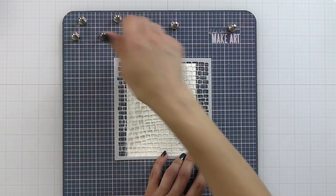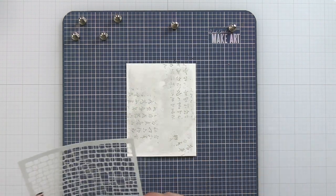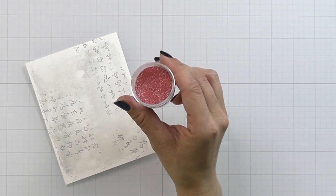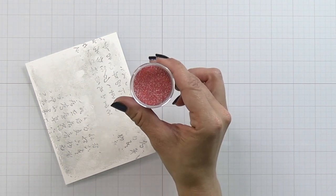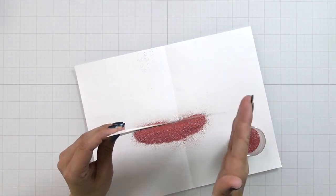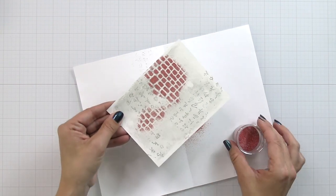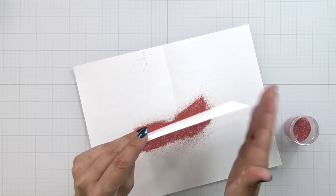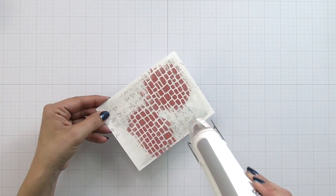After I remove the stencil I'm bringing in the brick embossing powder. I'll be honest, when I first saw this in person I thought it was sparkly, but it's not sparkly. There's white bits in there which makes it look super cool. I'm going to sprinkle this on to my background. You can see it's sticking to where I put that embossing ink.